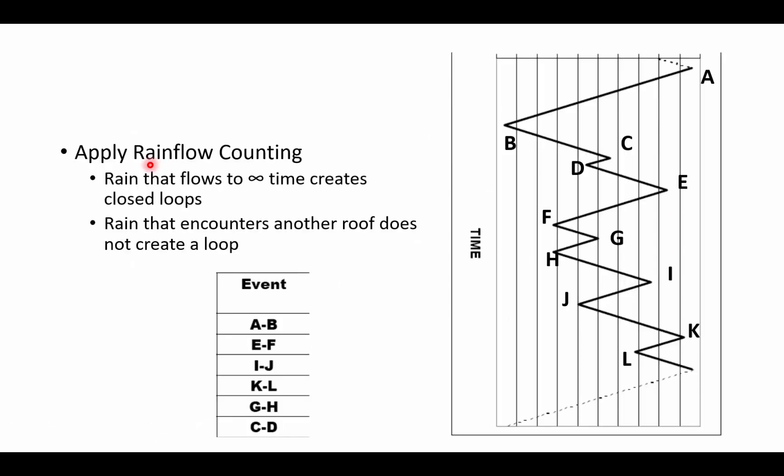Then, in applying rain flow counting, we take that strain history and we rotate it so that time flows downwards. And then what we'll do is we will draw how the rain flows, and if rain flows into infinite time, it's going to create a closed loop.